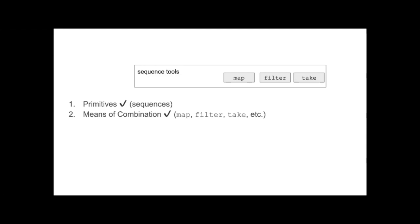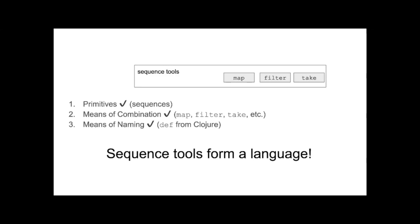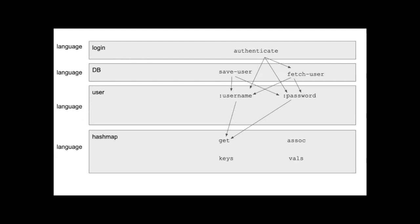This layer has primitives — sequences it gets from the layer below. It has new means of combination — map, filter, and take are new, not just given by the language. And it has means of naming, which it gets from Clojure. So this is actually a language — the sequence tools form a language. At least according to SICP's requirements, we have made a new language at this new layer, a new language for expressing ideas at this layer of meaning.